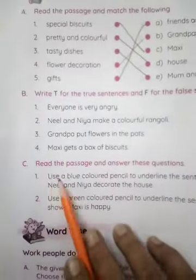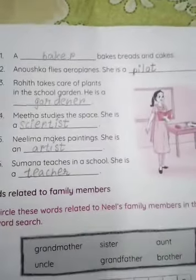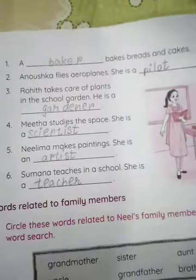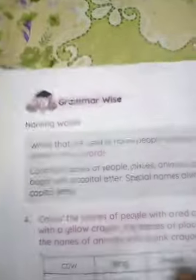Exercise A, exercise B, C, and D — work people do. Today we are going to do the next exercises. So children, take out page number 4 and get ready for the work.